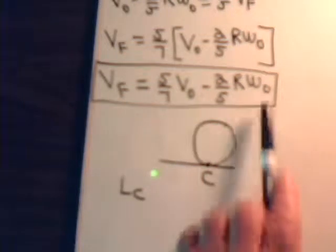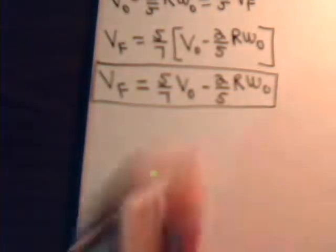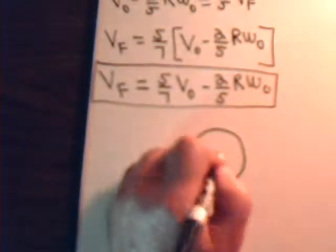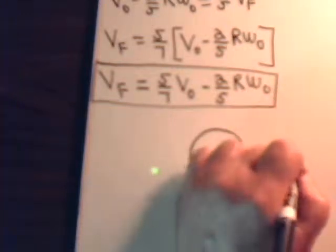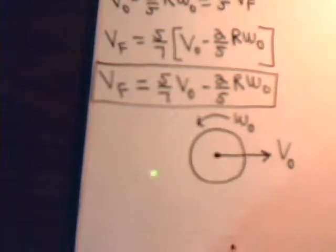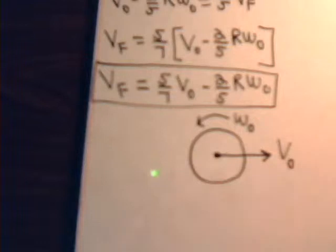If we know what V-naught and omega-naught are, then we'll know the final velocity when it goes into pure roll. In the next video, we'll consider a very similar situation — a bowling ball, billiard ball, or marble with an initial linear velocity and an initial backward spin — but we'll ask: if this skids forward and then comes to a dead stop, what would have to be the relation of omega-naught and V-naught in order for that to happen? That question we will answer in the next video. Thank you.